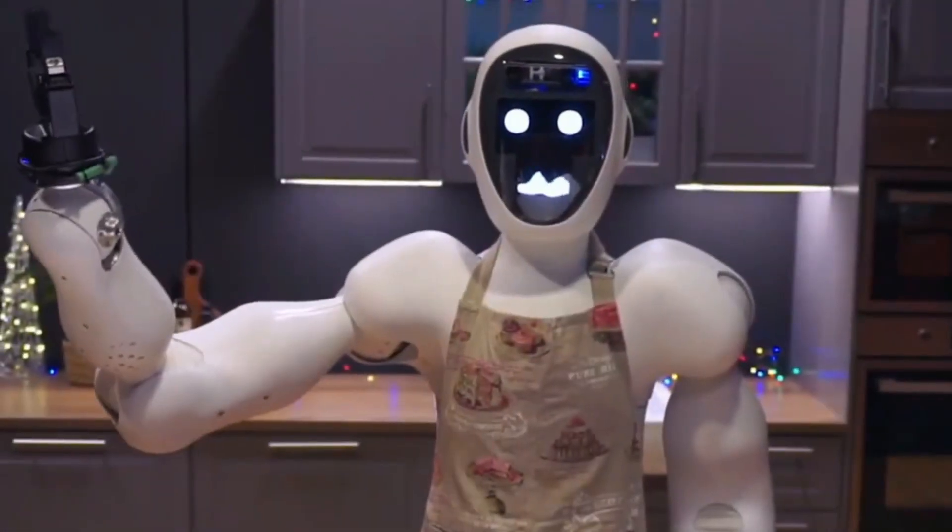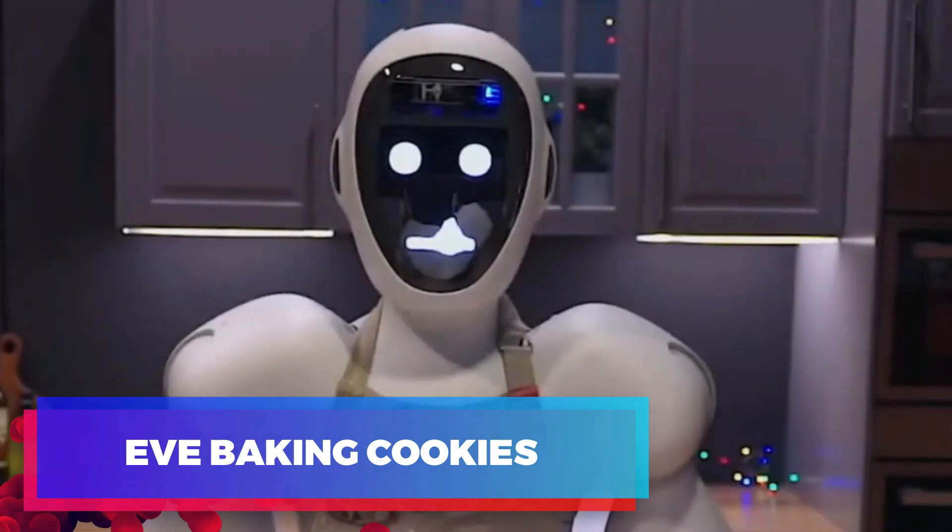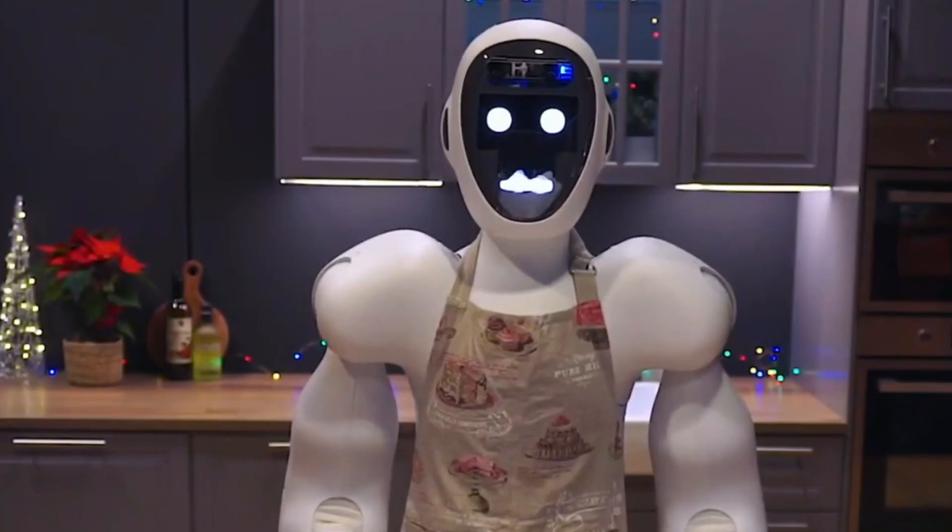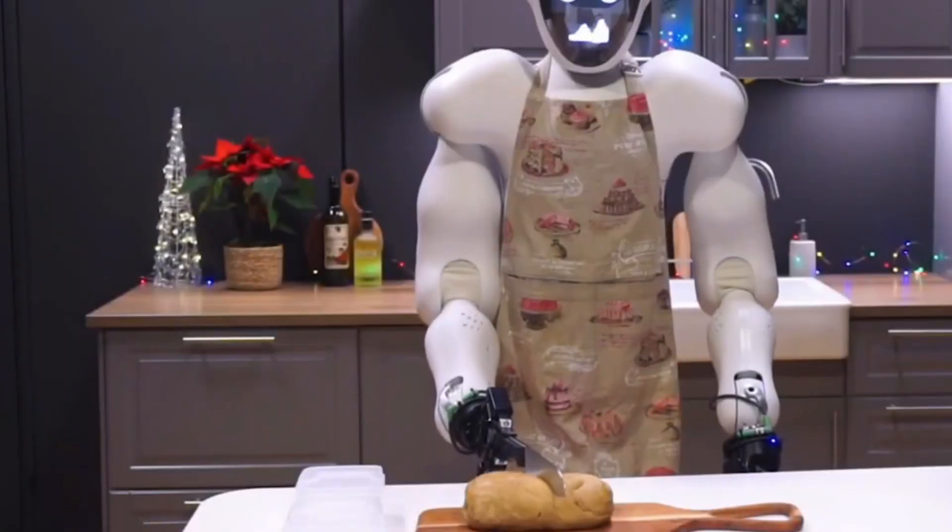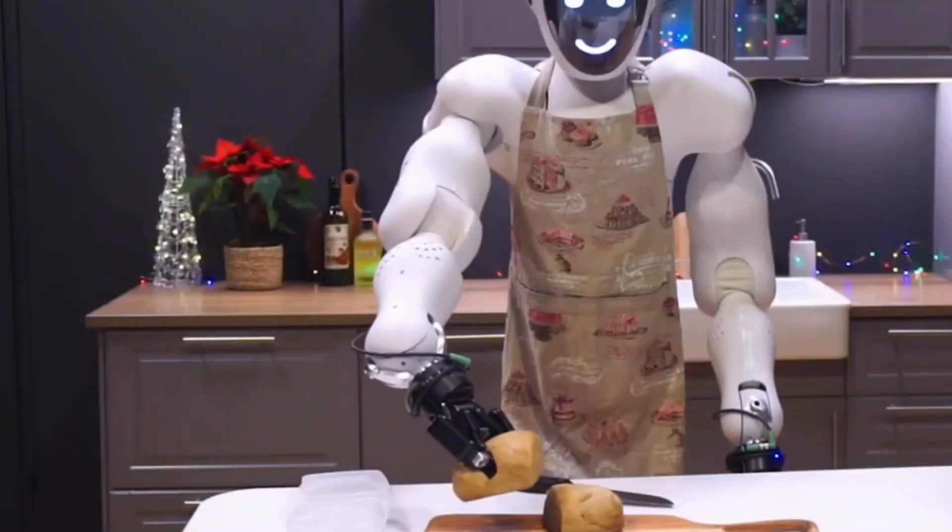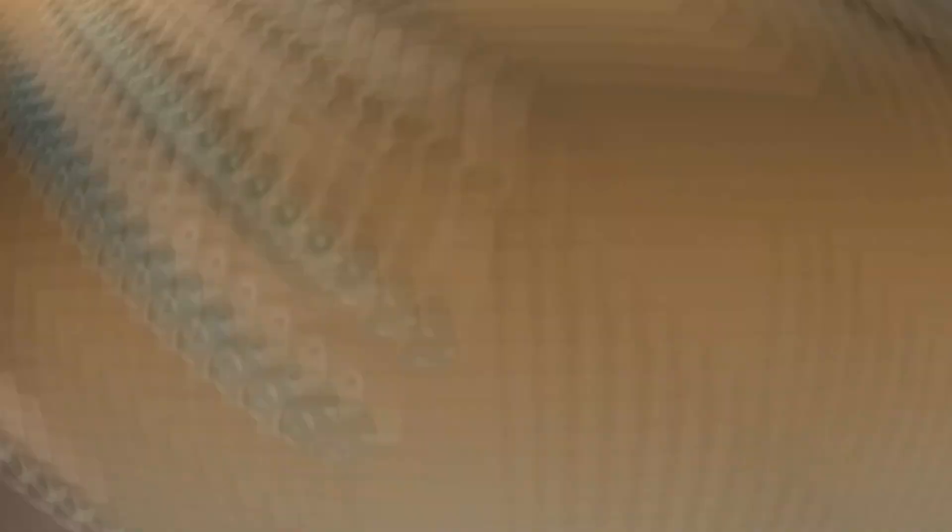In a video released a couple years ago, they showcased a robot called Eve baking cookies with incredible precision. Watching Eve grip bread and fetch items from the fridge seemed like something from a sci-fi movie. These early achievements by 1X Robotics set the bar high, and it will be fascinating to see how NIO's advancements surpass its predecessors.